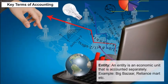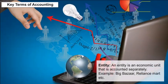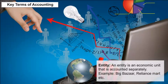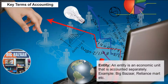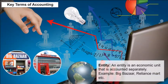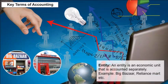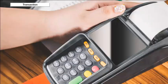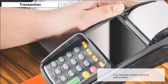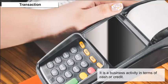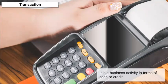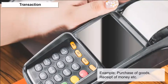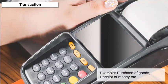It helps interested users to understand the financial condition of the business operation. Key Terms of Accounting — Entity: An entity is an economic unit that is accounted separately. Example: Big Bazaar, Reliance Fresh, etc. Transaction: It is a business activity in terms of cash or credit. Example: purchase of goods, receipt of money, etc.